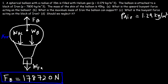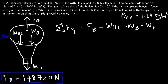The net force in the y-direction is the upward buoyant force minus the three downward forces: the weight of the helium, the weight of the balloon, and the weight of the iron. To find the maximum mass of iron, the net force must be zero — the balloon is simply levitating, neither accelerating upward nor downward, just remaining stationary.